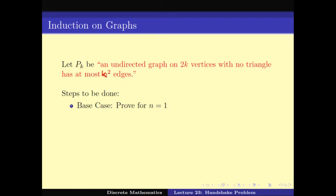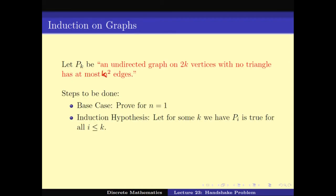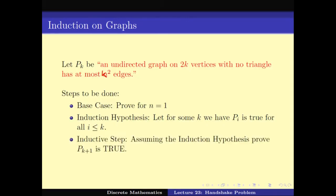The induction hypothesis can take different forms depending on the version of induction we use. In this case, we will use the hypothesis that for some k, P(i) is true for all i less than or equal to k — meaning P(1) is true, P(2) is true, P(3) is true, all the way to P(k) is true. Under that assumption, can we prove P(k+1) is true? That is the induction version we will use.